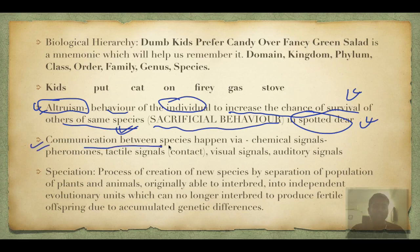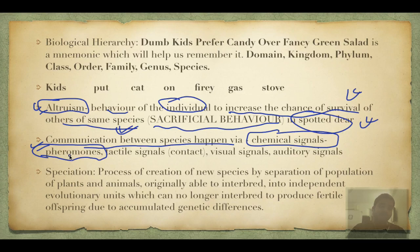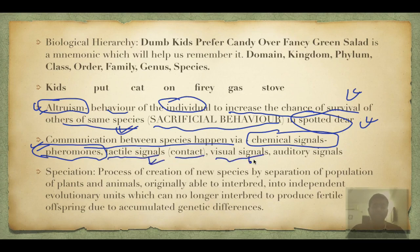Communication between species happens via: chemical signals — pheromones, which are hormones secreted by individuals of a species and detected by individuals of the same species, signaling things like fight, reproduction, or start of breeding season. Also tactile signals (by touch), visual signals (by eyes), olfactory signals (smell, also via pheromones), and auditory signals (via ears).